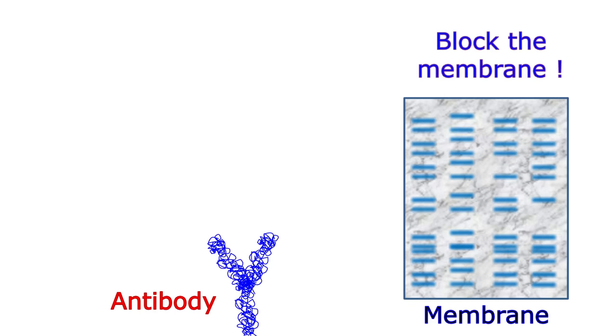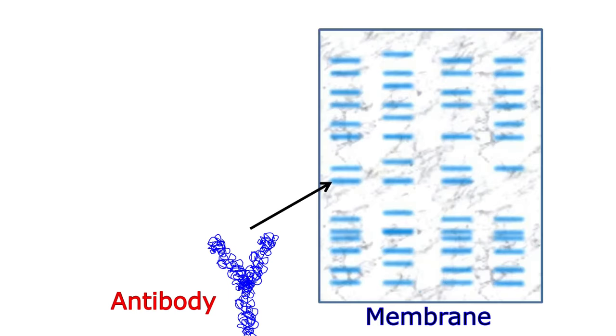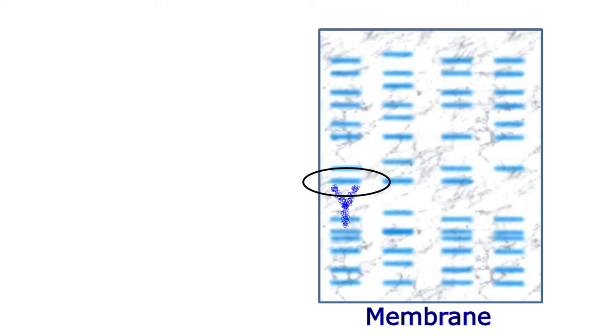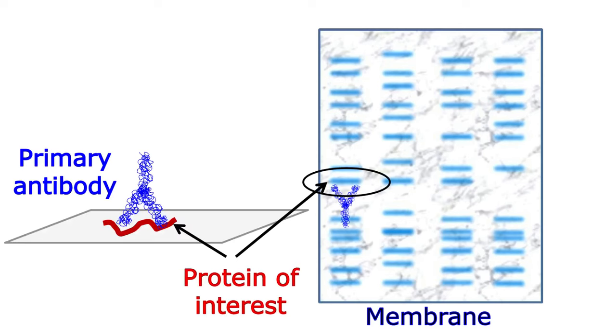Once the membrane is blocked, it is treated with an antibody that specifically binds our desired protein. This is known as the primary antibody.